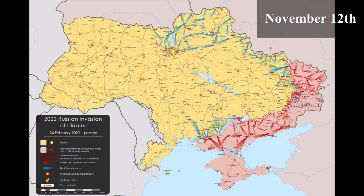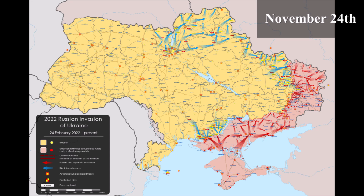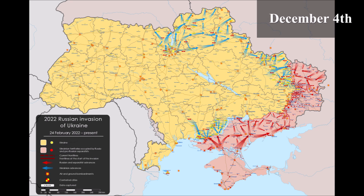The fourth phase covers the period from November 12, 2022, following the conclusion of Ukraine's Kherson and Kharkiv counteroffensives, to June 7, 2023, the day before the 2023 Ukrainian counteroffensive began.